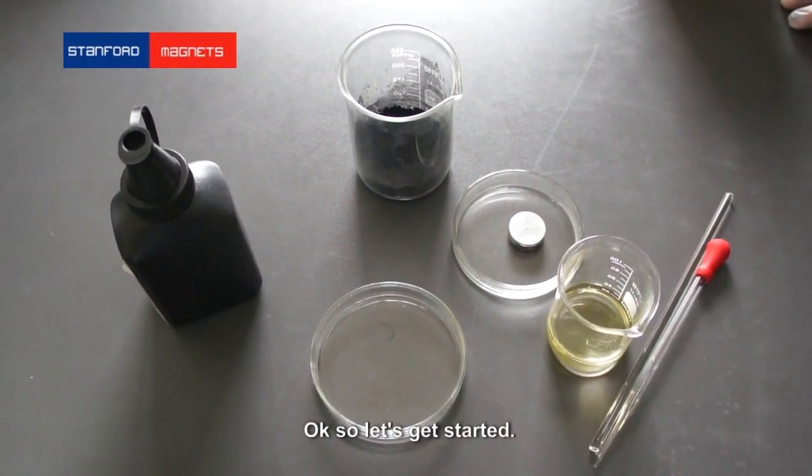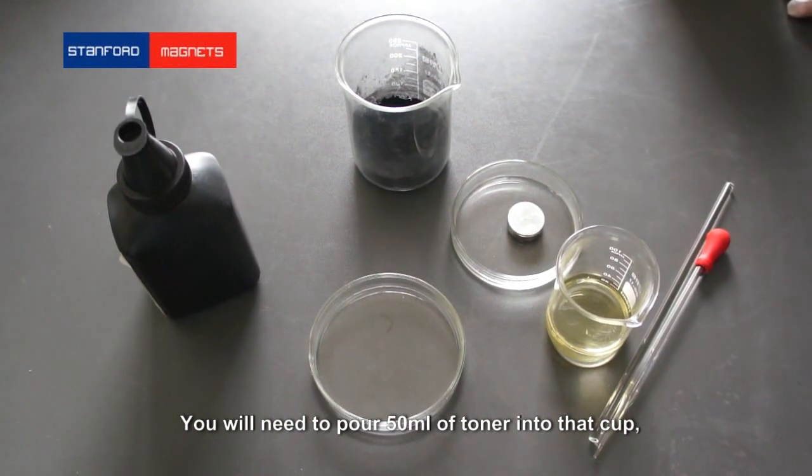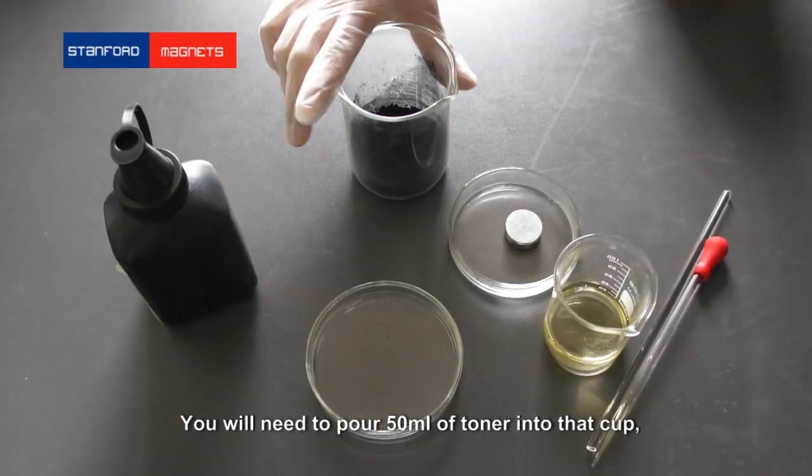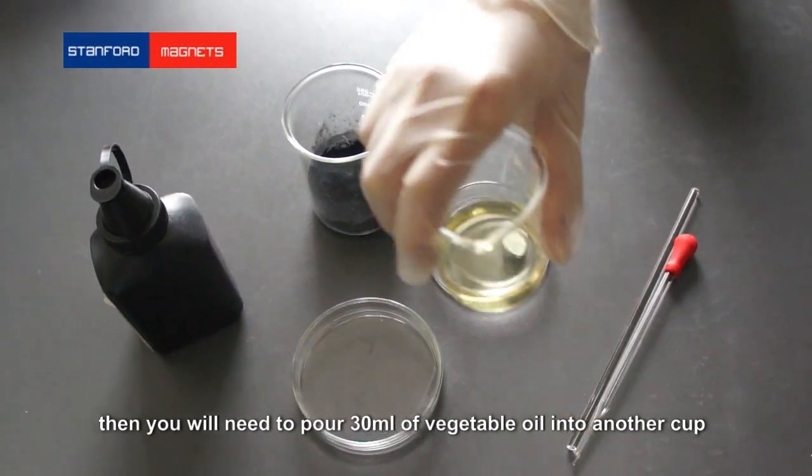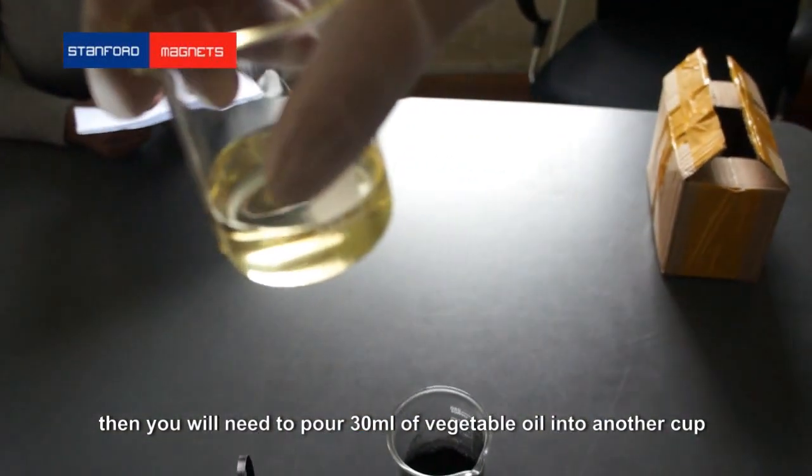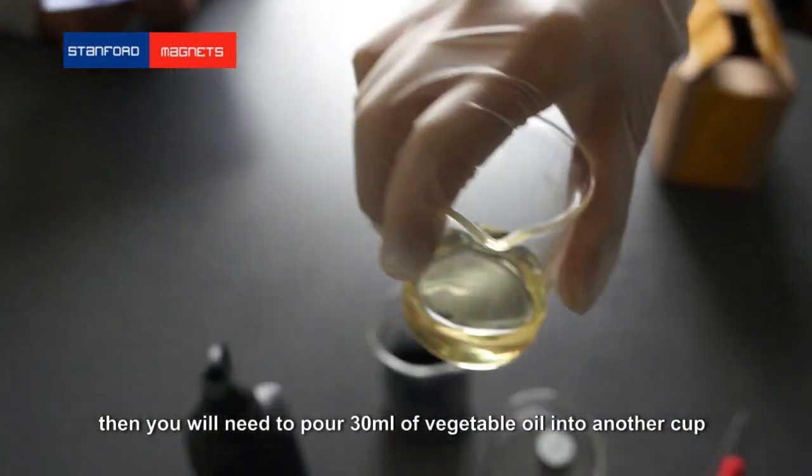Ok, so let's get started. You will need to pour 50ml of toner into a measuring cup. Then you will need to pour 30ml of vegetable oil into another cup.